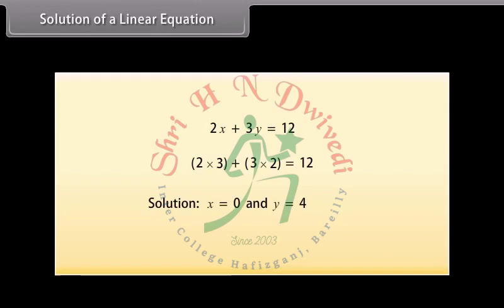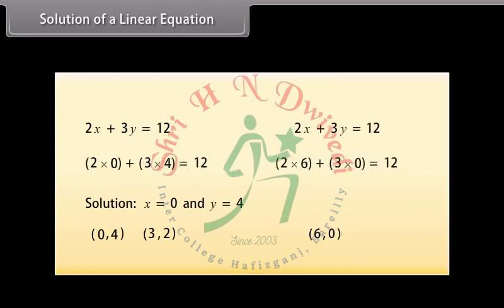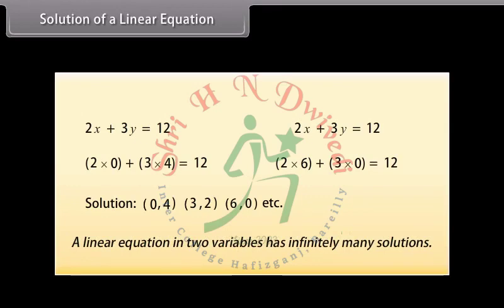Similarly, (0, 4) is also a solution for this equation because when you substitute X is equal to 0 and Y is equal to 4 in the equation, you find that the answer becomes 12. We have found at least two solutions for this equation. Can you find any other solution? Is (6, 0) also a solution? Yes, (6, 0) is also a solution because when you substitute X as 6 and Y as 0, the answer becomes 12. Similarly, many other solutions can be found from this single equation — there is no end to different solutions. Therefore, a linear equation in two variables has infinitely many solutions.